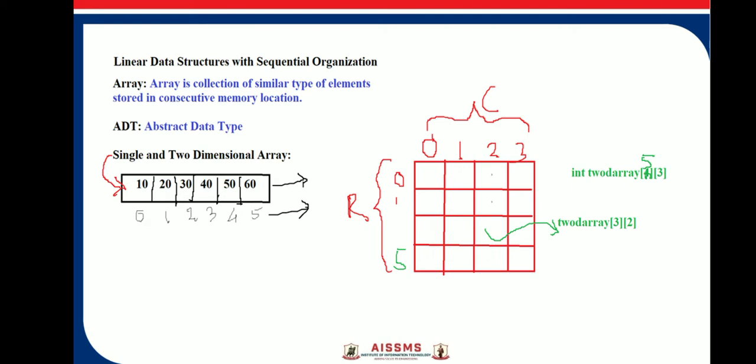An array is basically a set of pairs of index and value. The syntax of an array starts with the data type, followed by the name of the array, and inside brackets we write the size. For example, a 2D array where this is the name of the array and 3 by 2 is the size.